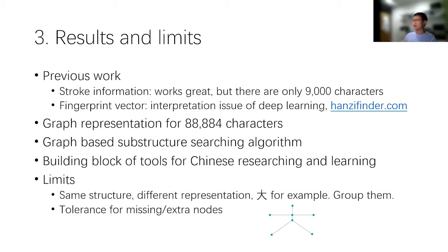So what we did is we developed three versions of substructure searching. Stroke information is great, but it only covers 9,000 characters. We want to have a larger coverage for research purpose. So we have the second version, but it's a convolutional neural network. So it suffers from the interpolation issues. We cannot explain what those 64 numbers mean. And it's not reliable. That's why we have the third version, the graph representation, with these tools, they can be the building blocks for other Chinese research and the learning process. Jennifer did some very interesting cases. Talk to her. It's going to be fun. And you can use this tool to do other funny things. Use your imagination.